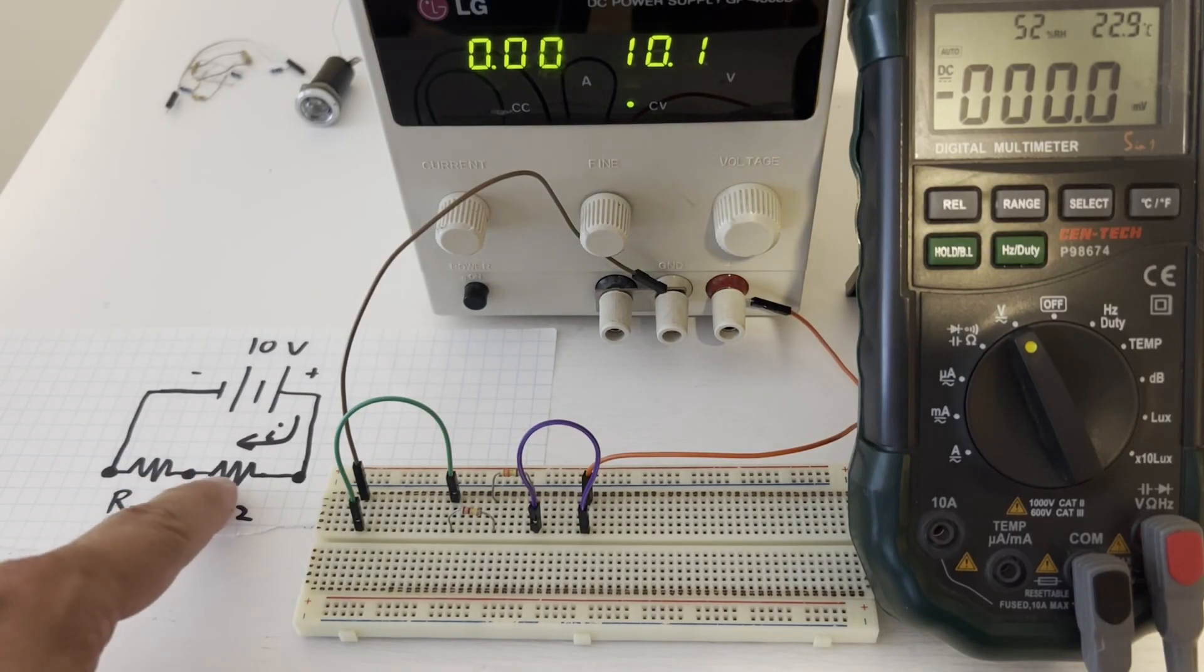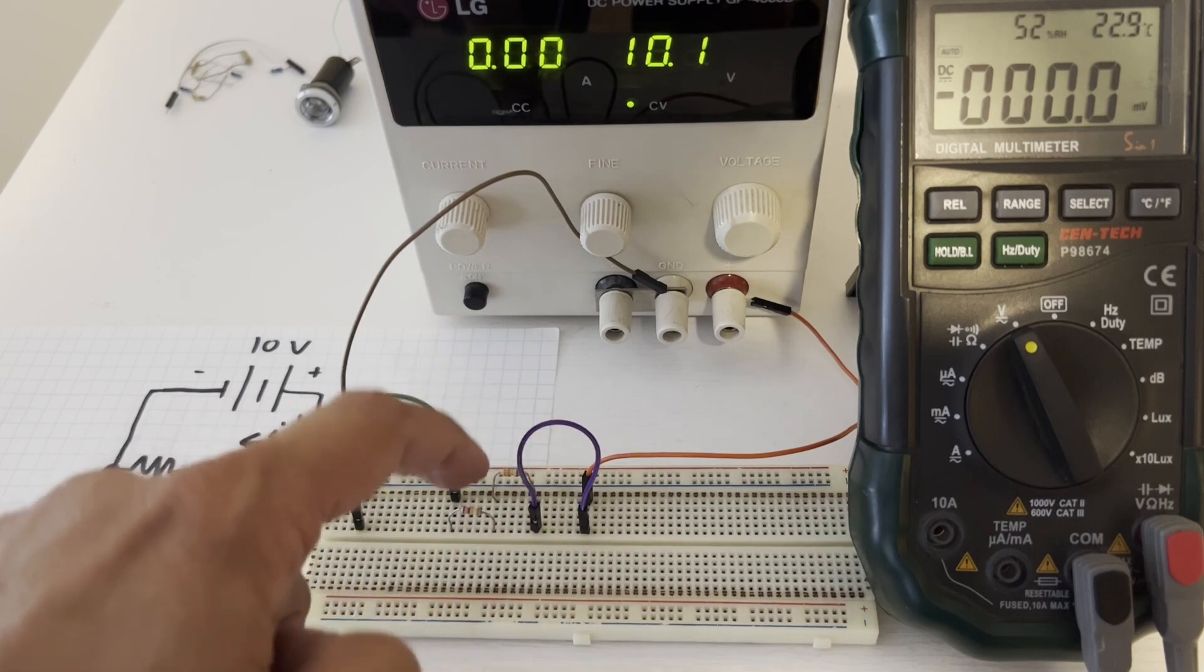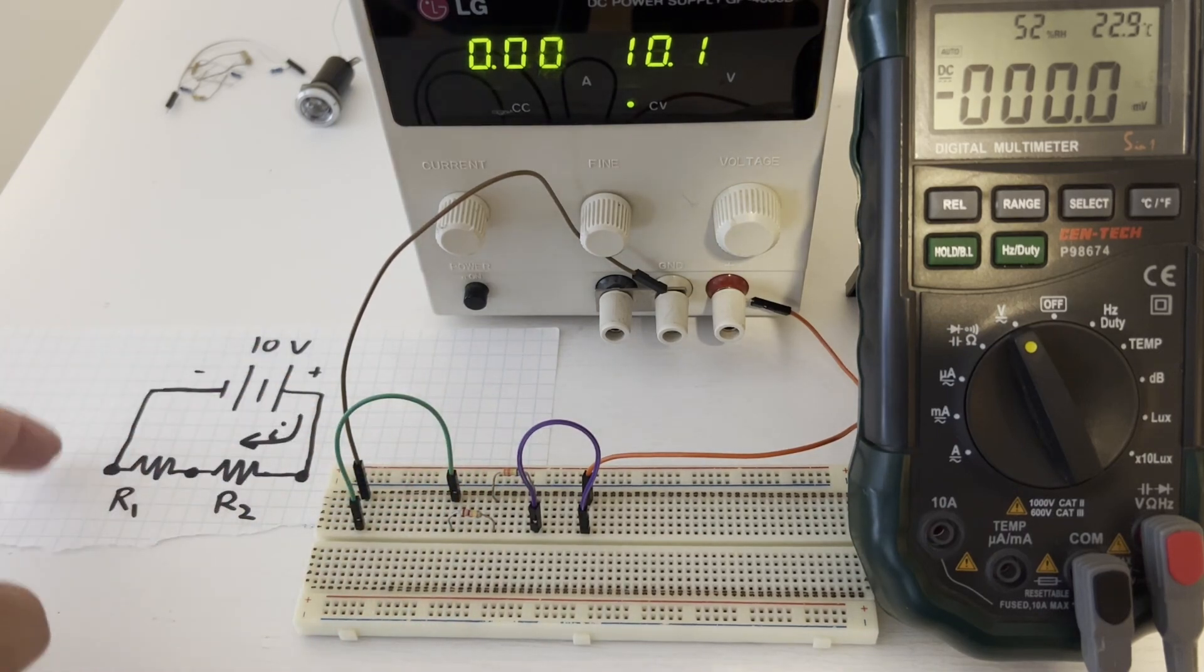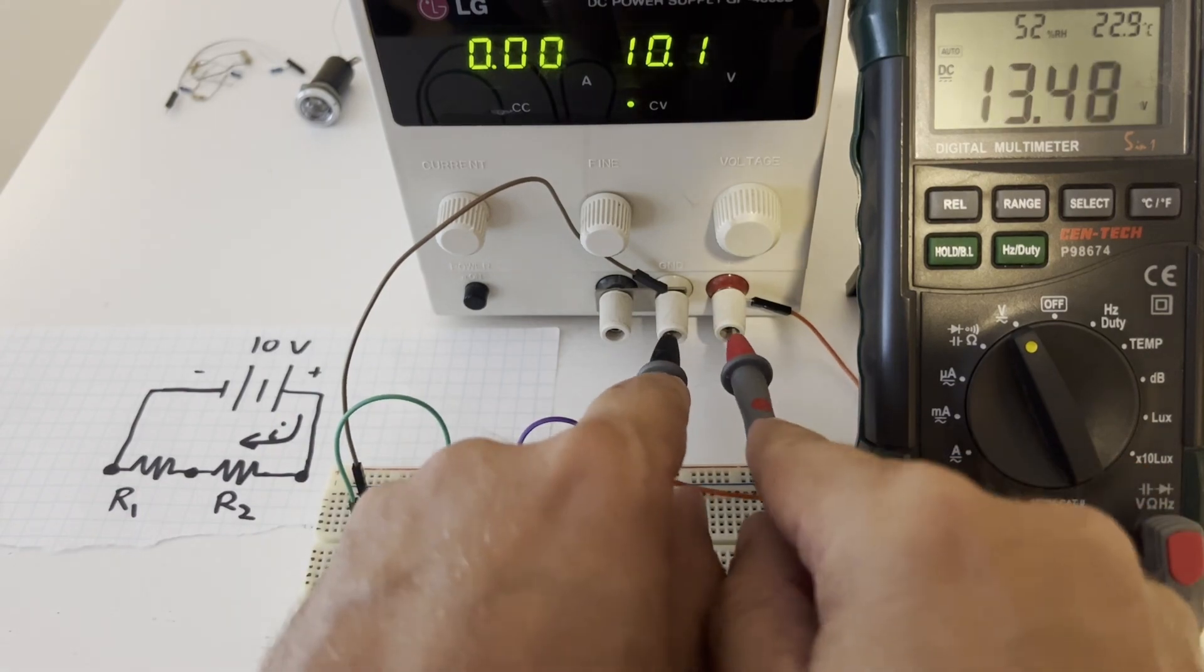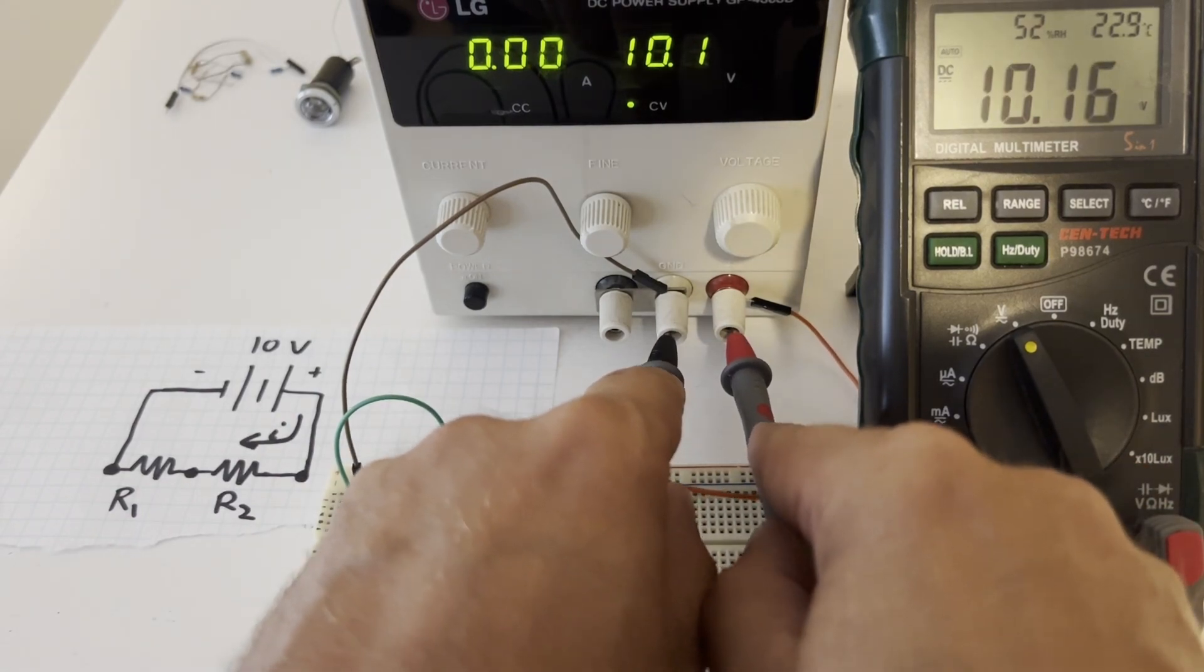Now let's look at a circuit where we have 10 volts and we have two resistors. So here's our two resistors and 10 volts. First, let's measure the voltage of the power supply. So that's 10.16 volts.